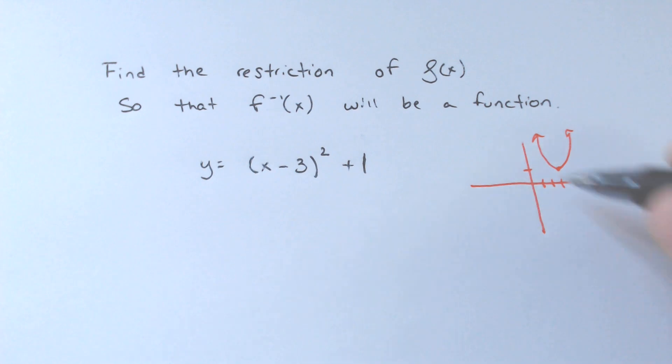But because this graph fails the horizontal line test, when you were to graph the original, or when you're graphing the new one, which would actually be a little bit different, instead of being right 3 up 1, it's actually going to be right 1 up 3, it would actually fail the vertical line test.